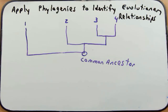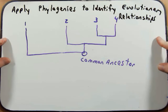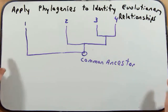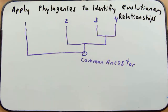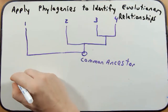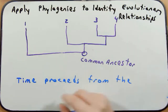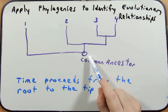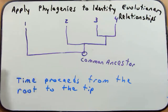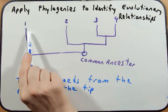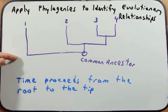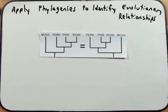Now let's think about how we apply phylogenies to understand evolutionary relationships. In this phylogenetic tree, time proceeds from the root to the tip. Do not read a phylogenetic tree going from one, two, three, and four — those tips show end products, not the progression. The time progression goes from roots to tips.